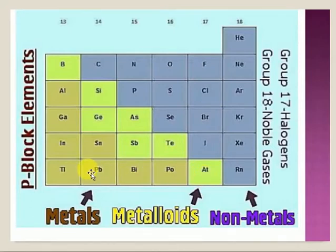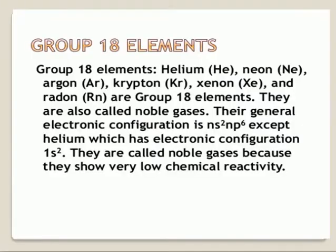In P-block elements you can find metals, non-metals, and metalloids. Now I am discussing about the 18th group family. The 18th group is also called the inert group — rare gases, inert gases, noble gases. All these names refer to the same group. The 18th group contains Helium, Neon, Argon, Krypton, Xenon, and Radon.